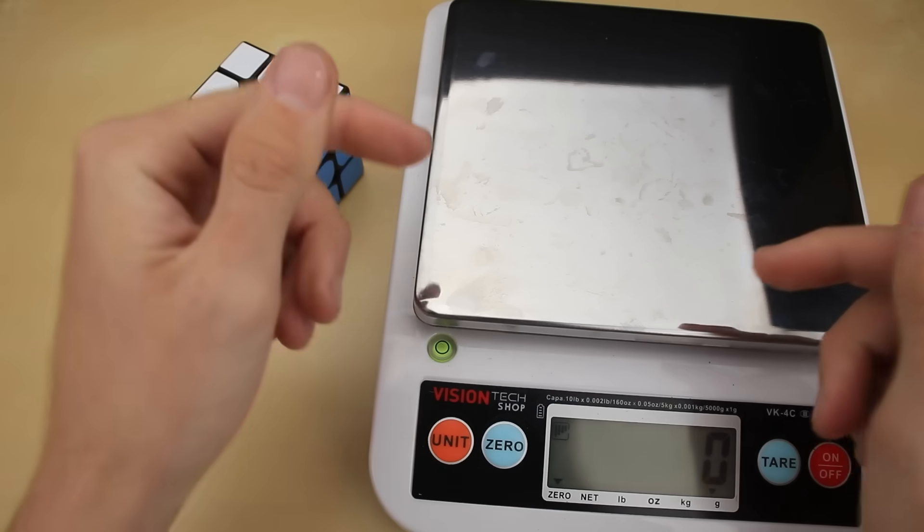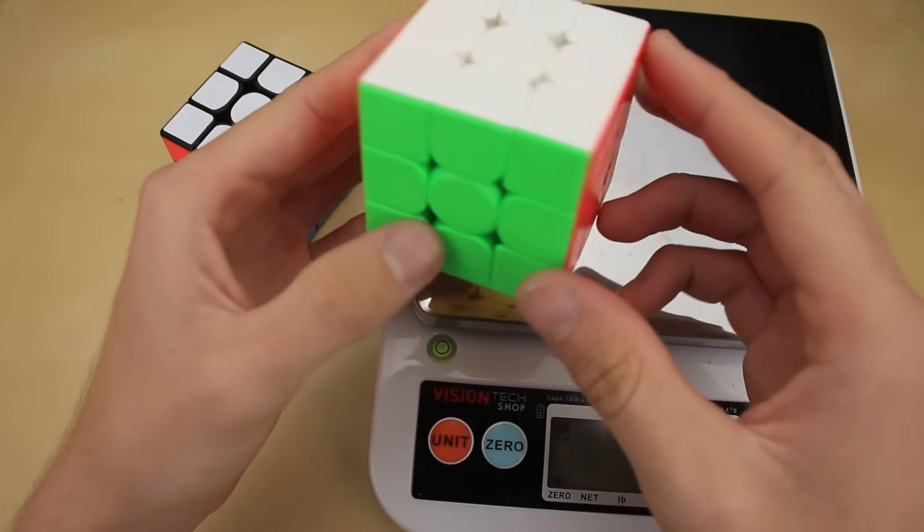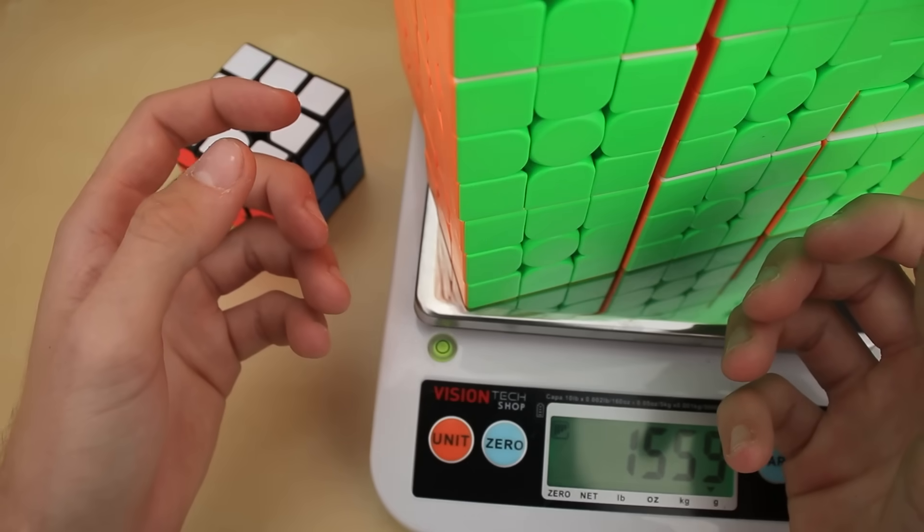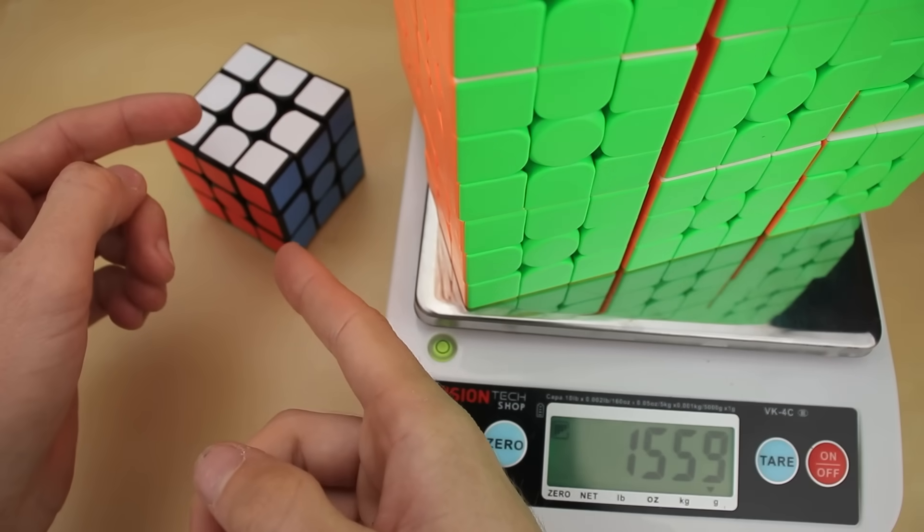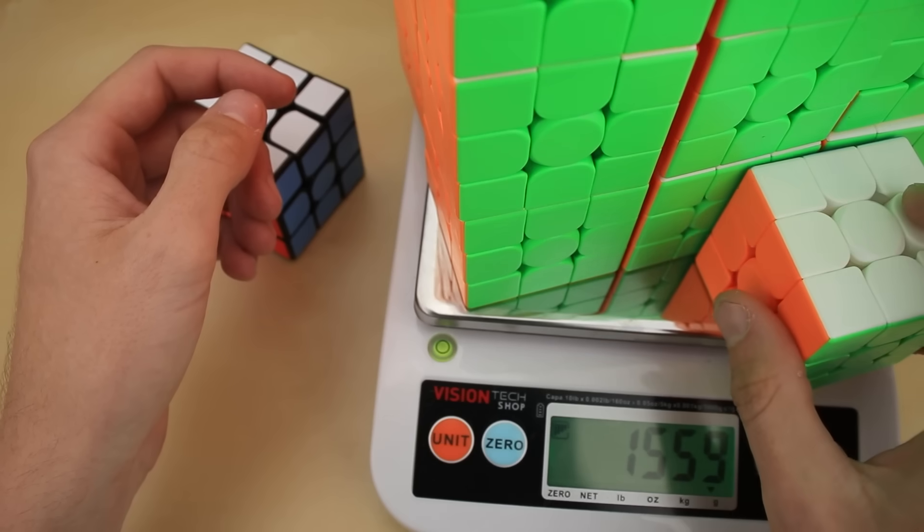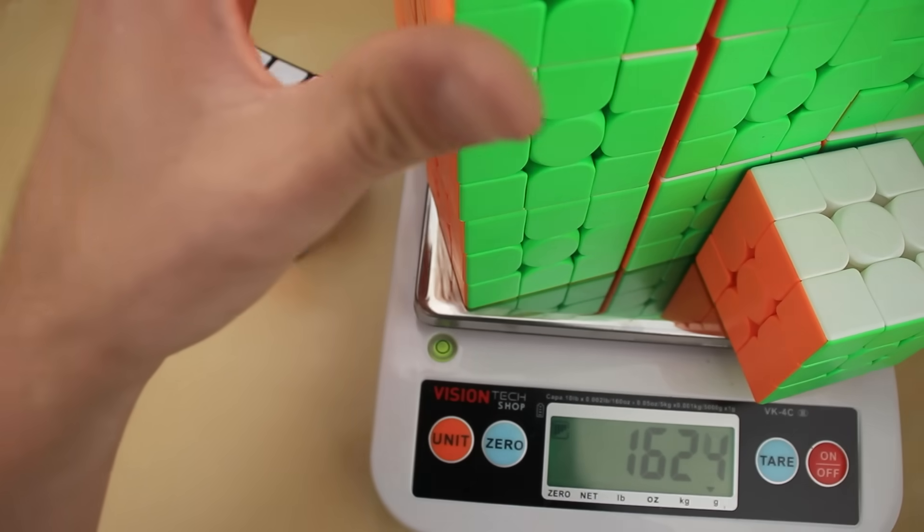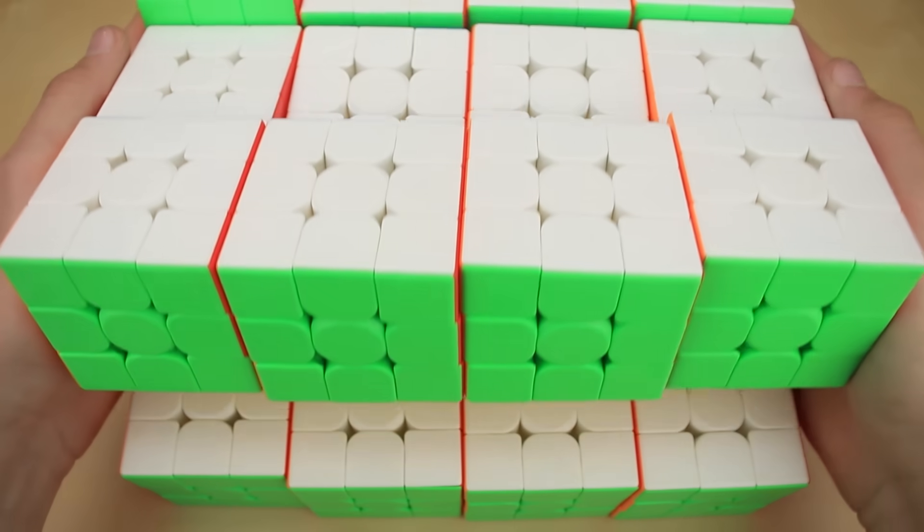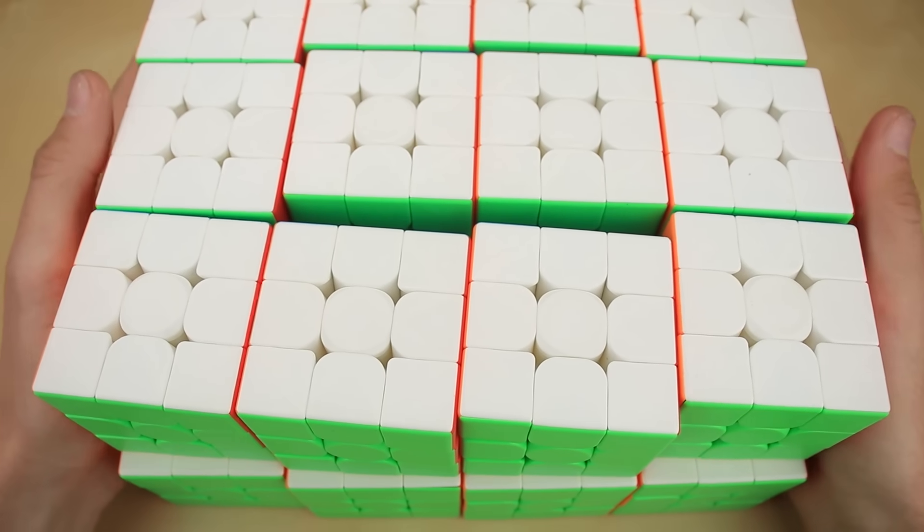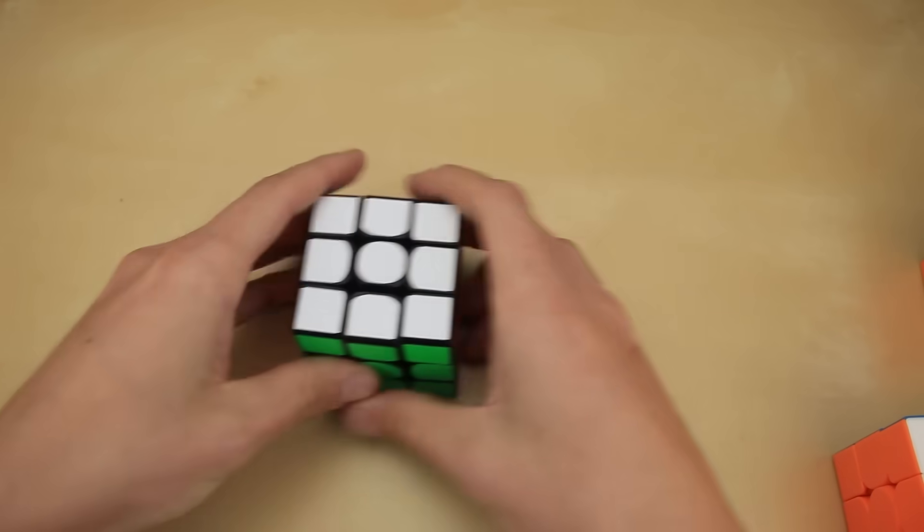And just to give you an idea of how heavy that really is, let me compare it to a few standard-weight 3x3s. And by a few, I mean 24. That's how many normal 3x3s we need to even get close to the weight of this one. And in fact, we actually need a 25th cube to surpass it. That's more cubes than even fit inside the camera frame. Here's a better look at them all. This is two layers deep. And all of this is still lighter than this is.